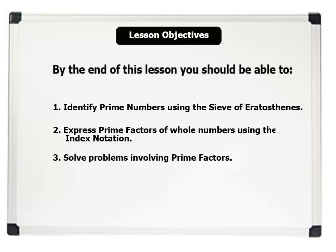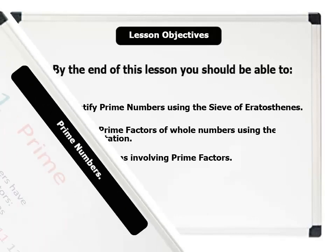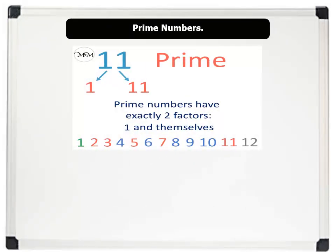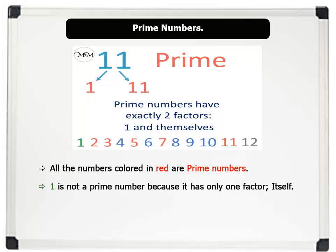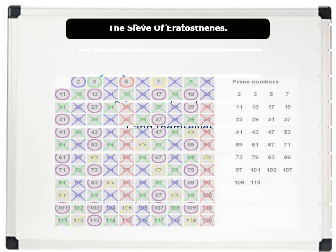Let us now begin. A prime number is a whole number which has only two factors: one and itself. As shown on the board, all the numbers colored in red are examples of prime numbers. Note that one is not a prime number because it has only one factor — itself. So two, three, five, seven, and eleven are all prime numbers.